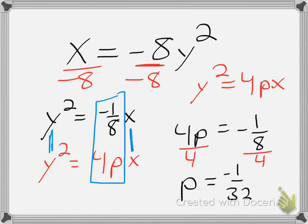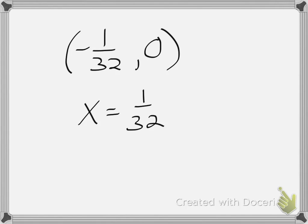Since that's my p value, and because it's a y squared equation, we know that it's going to open to the right or to the left. And again, because it's negative, it's going to open to the left. This tells us that our focus is going to be the point negative 1 over 32, 0. And our directrix is x equals the opposite of p, which in this case is going to be positive, 1 over 32.